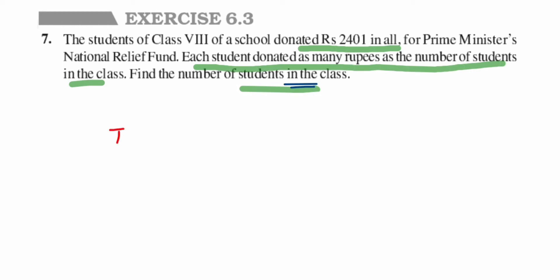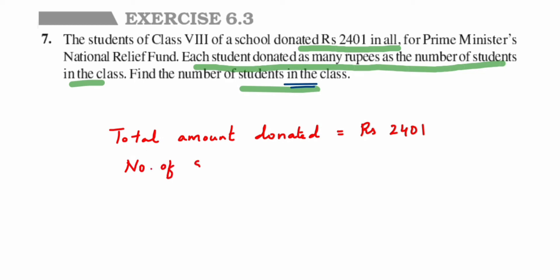So the total amount donated — rupees 2401 — is actually the square of the number of students in the class. To find how many students are there, I need to find the square root of 2401. The number of students in the class will be equal to the square root of 2401.